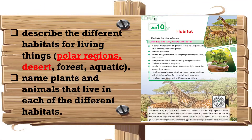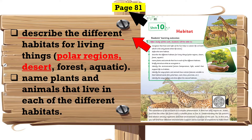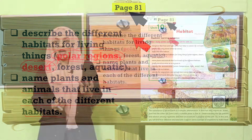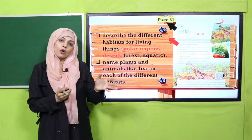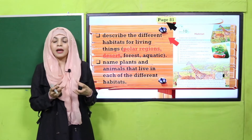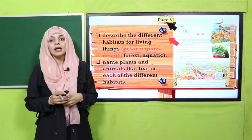My dear students, you have seen different habitats. Now today's student learning outcome is given on page number 81. By the end of today's lesson, students will be able to describe the different habitats for living things like polar region and desert, and name plants and animals that live in each of the different habitats. Aaj hum in do habitats ko discuss kareenge - polar region and desert - aur yahan par kaun kaun se plants aur animals rehte hain, unke baare mein bhi padhenge.